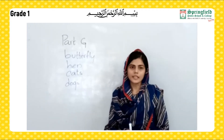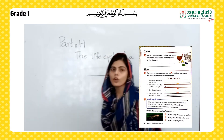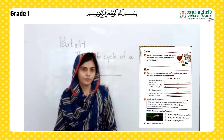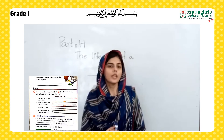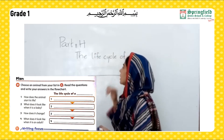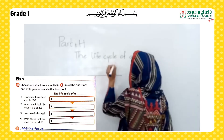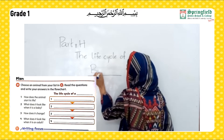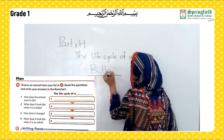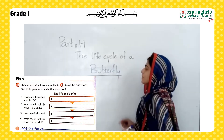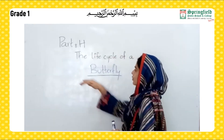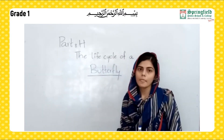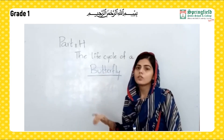Moving towards our next part — Part H. In this part, you have to write about the life cycle of a butterfly, or you can choose any organism. I am choosing a butterfly, so I am going to write the life cycle of a butterfly. We have been given four questions to attend accordingly. The first question is: how does the animal start its life? The butterfly lays eggs.